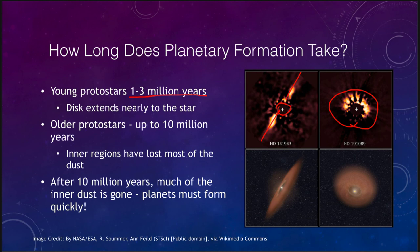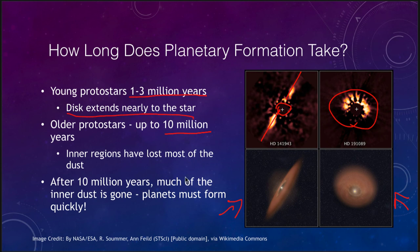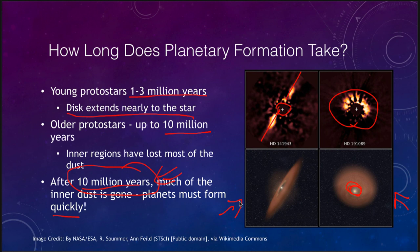We can get an idea from the artist conception sketches below as to what these systems might look like. In some of the younger protostars, even up to 10 million years old, the disk extends nearly into the star. In older protostars, the inner regions have lost most of their dust — those inner sections are beginning to be cleared out. This must happen very quickly because after about 10 million years the dust is gone. The material that could possibly build planets is gone, so planet formation must occur within this 10 million year timeframe.